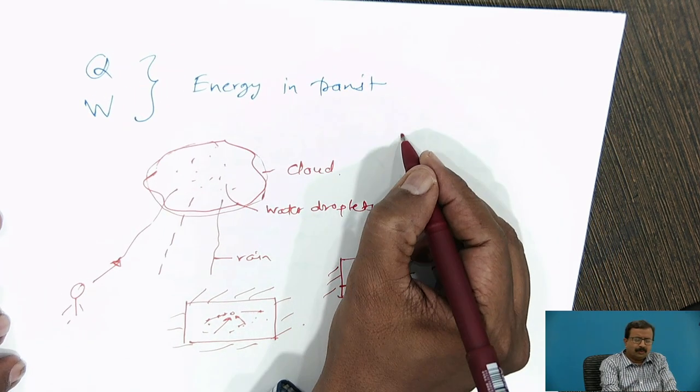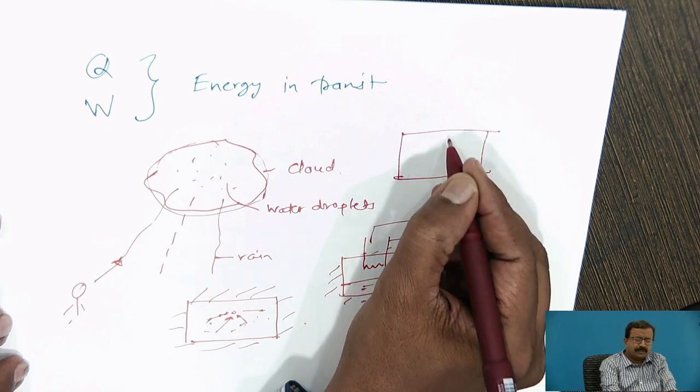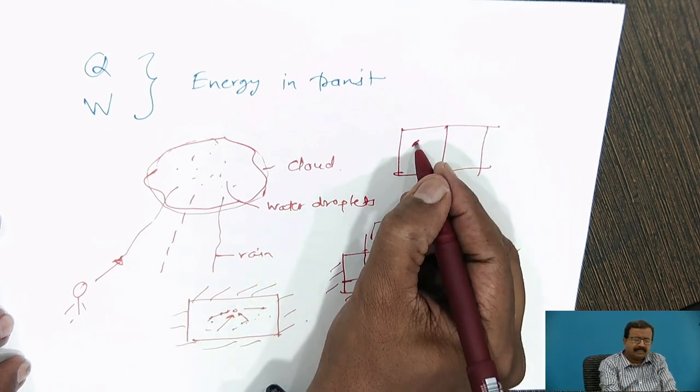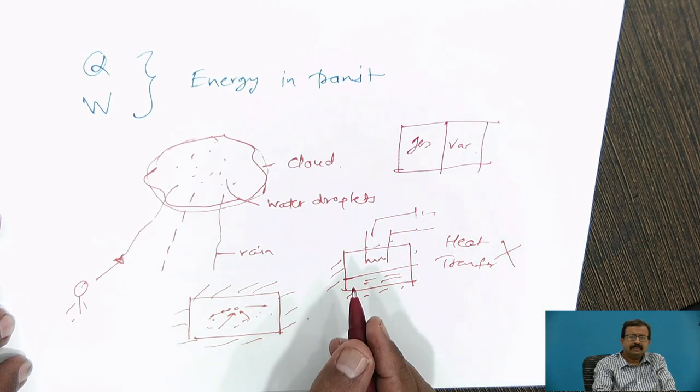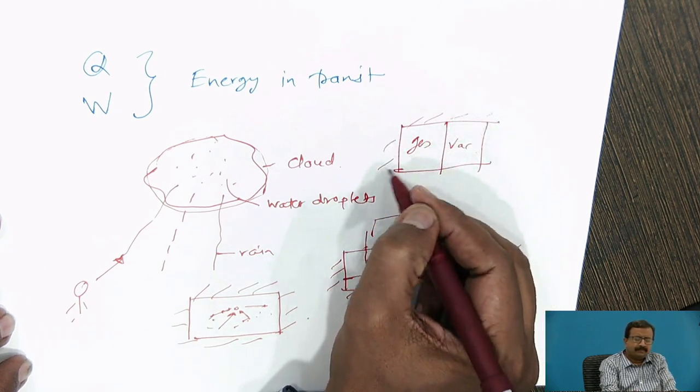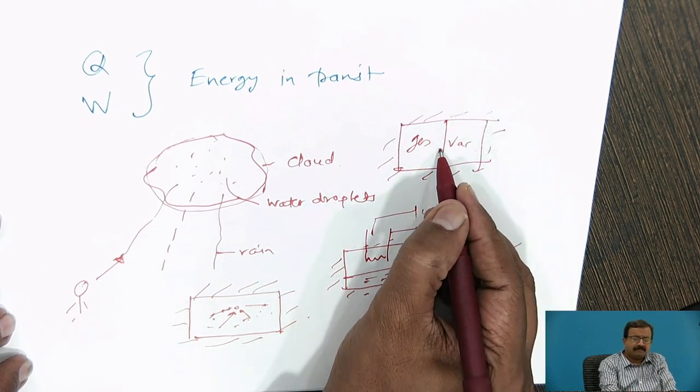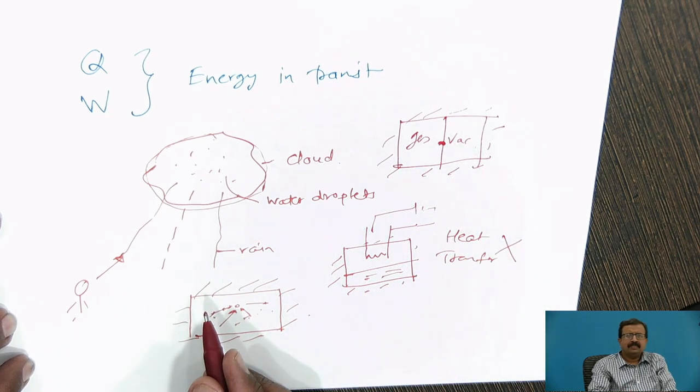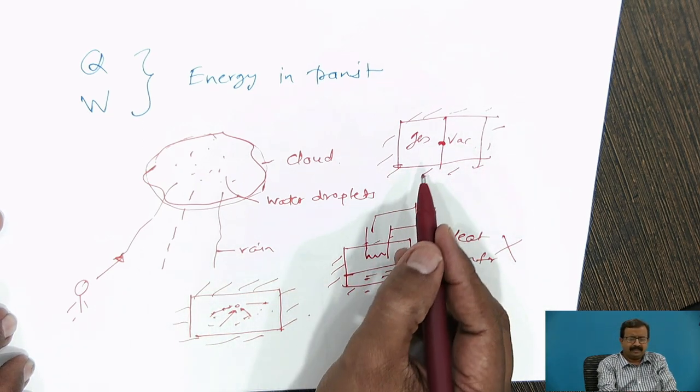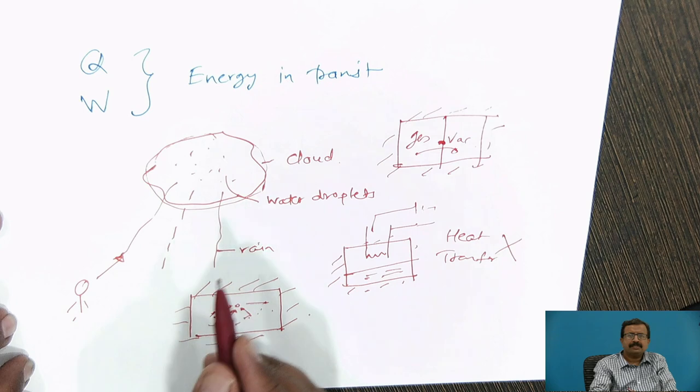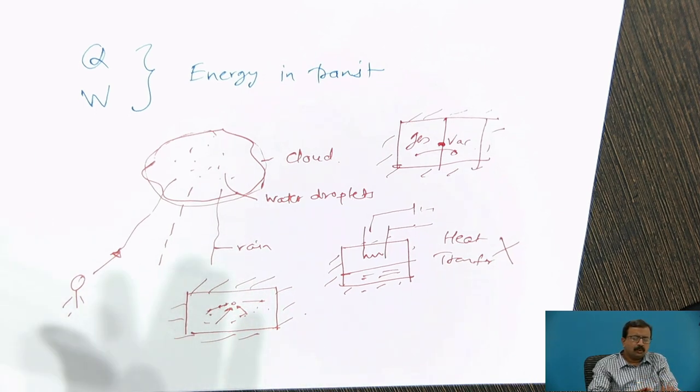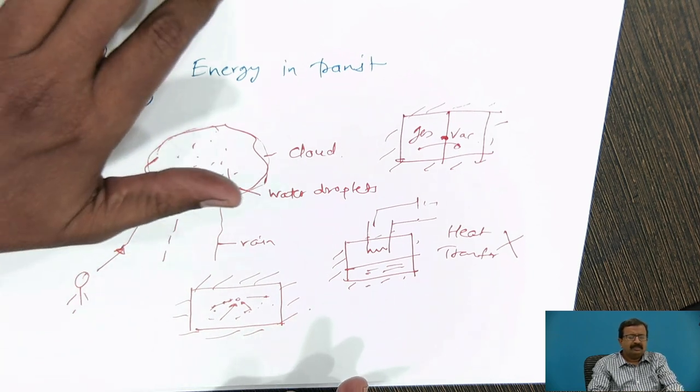Another simple example, suppose I have two chambers and some membrane here. Here is some gas and here is some vacuum. And this is insulated. Now, what happens? When I puncture this, then automatically I get the gas moving from this to this system. Because of this, there is no work done because there is no resistance to it.